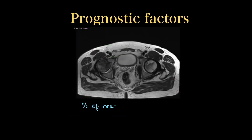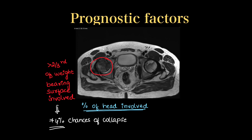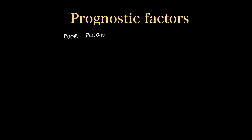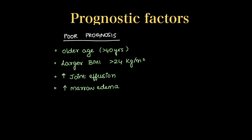The most important prognostic factor is the percentage of head involved. If more than two-thirds of the weight-bearing surface of the femoral head is involved, there is a 74% chance of collapse. Other poor prognostic factors include older age (over 40 years), larger BMI (over 24 kg/m²), and increased joint effusion or marrow edema.